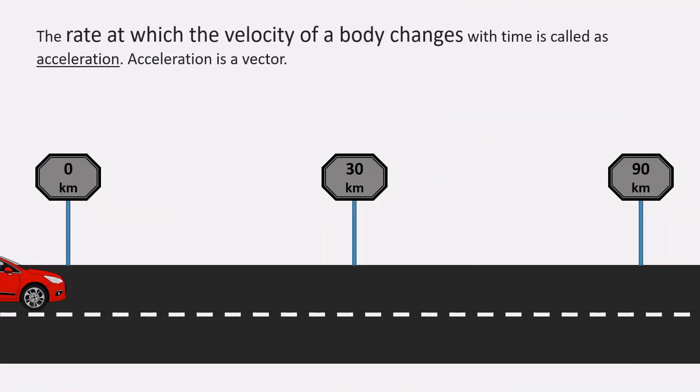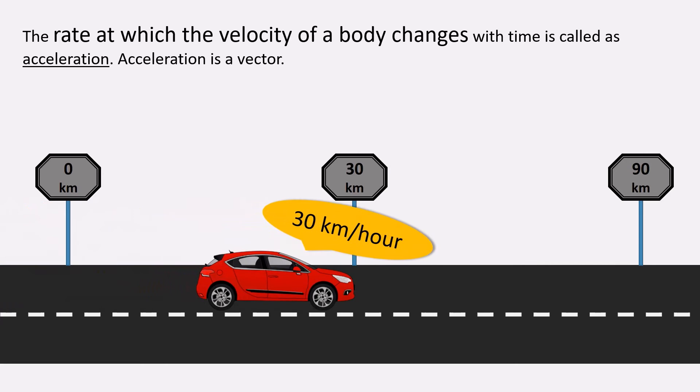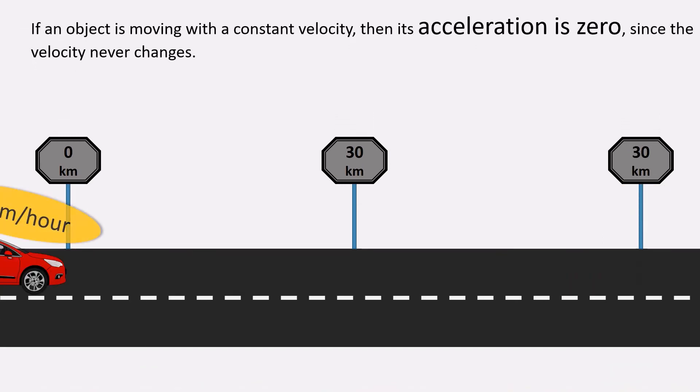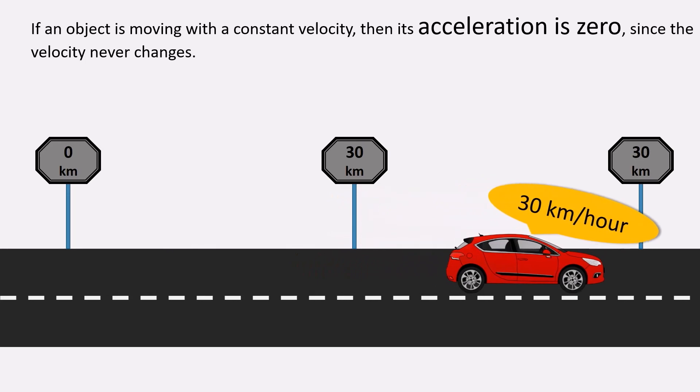The rate at which the velocity of a body changes with time is called acceleration. Acceleration is also a vector. If an object is moving with a constant velocity, then its acceleration is zero since the velocity never changes.